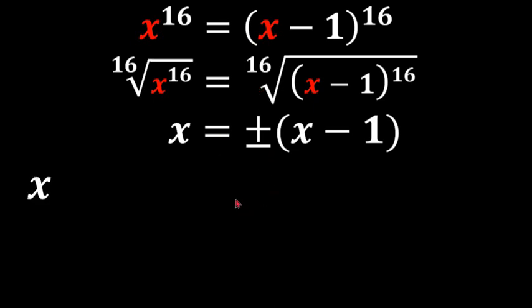So because of our plus or minus we're going to have two different options. We're going to have x is equal to x minus 1, as well as x is equal to negative x plus 1.